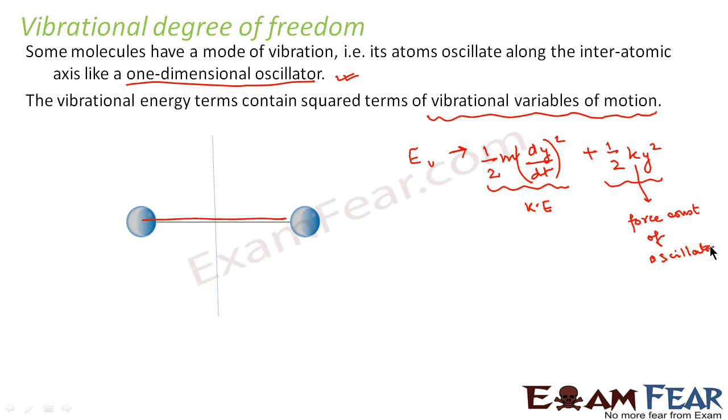Two squared terms, rather, of vibrational variables of motion. That's because the vibrational degree of freedom consists of both kinetic energy as well as potential energy.